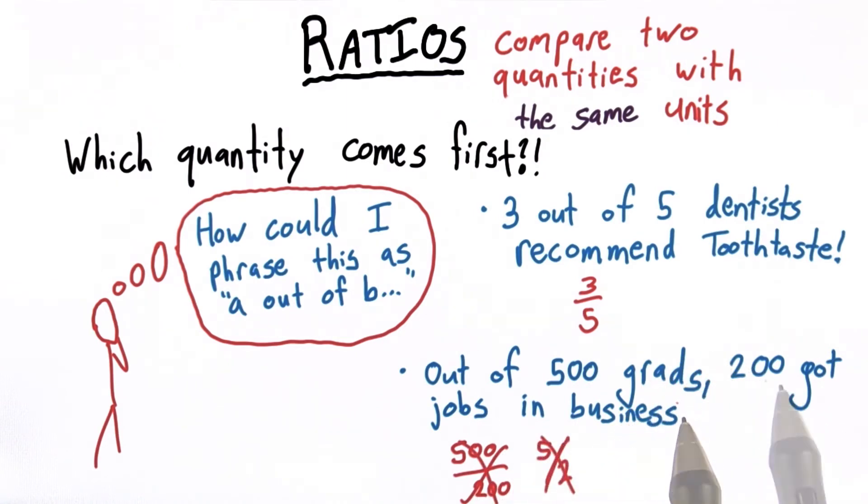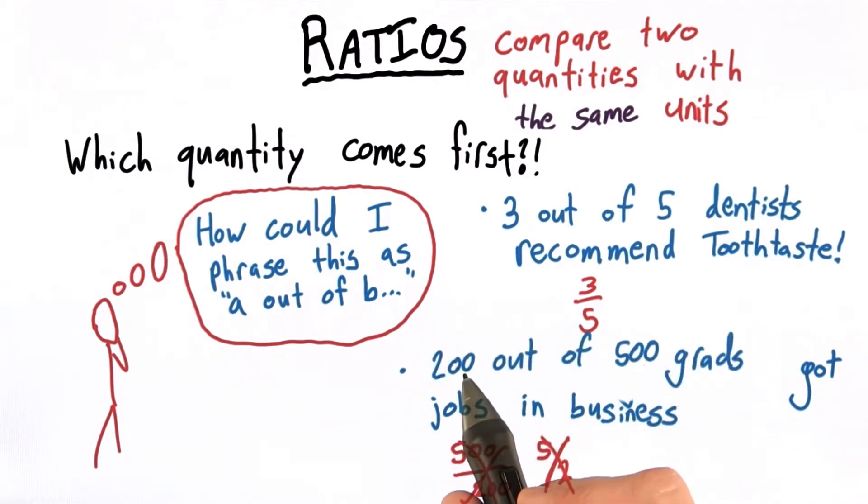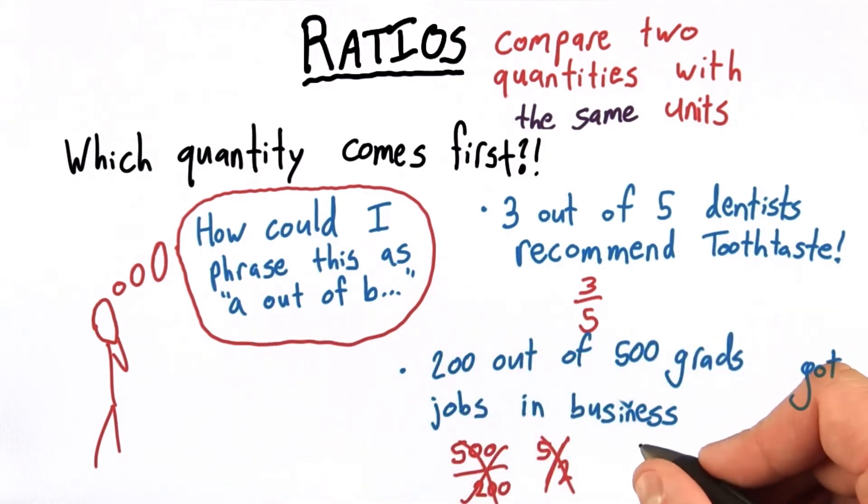However, I could have rephrased this as 200 out of 500 grads got jobs in business and now 200 is my A, 500 is my B, and my ratio is 200 out of 500 or 2 out of 5.